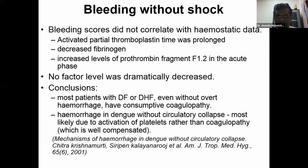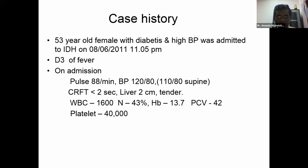Studies to correlate bleeding scores with hemostatic data show that some demonstrate prolongation of APTT and reduction of fibrinogen. However, clotting factors were not significantly deranged during the bleeding episodes in these patients, so it is thought to be due to multiple factors.